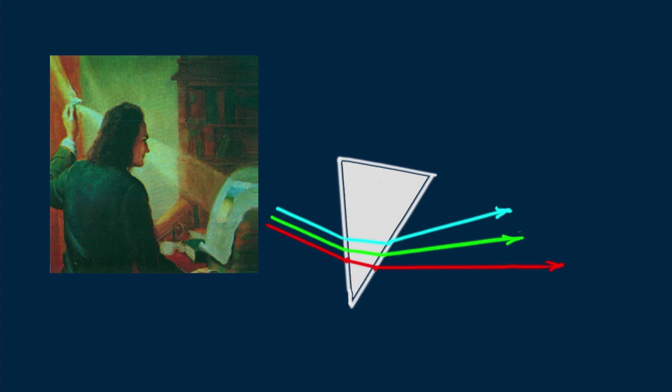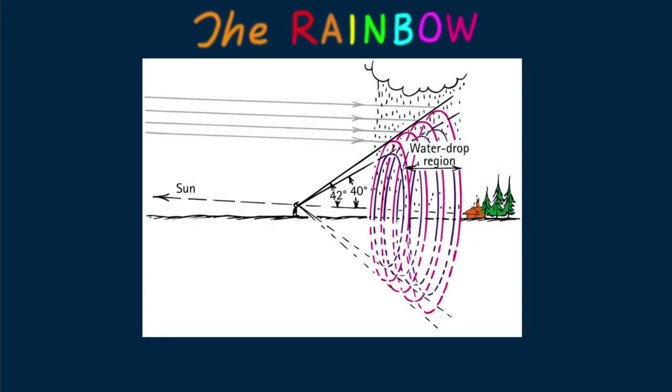Dispersion also occurs in water, where violet light is slower than red light by about 1 percent. A most spectacular illustration of dispersion by water is a rainbow.